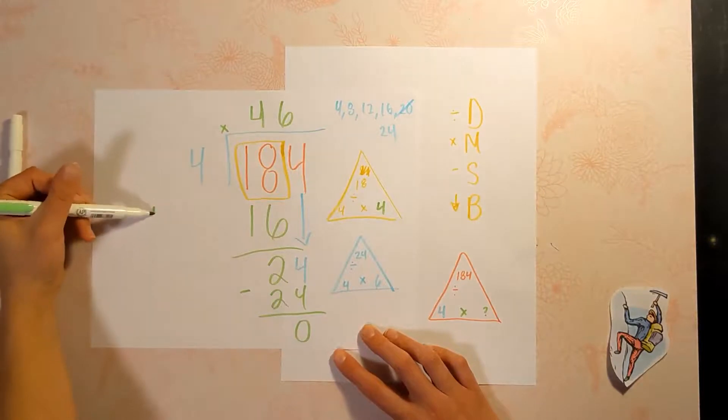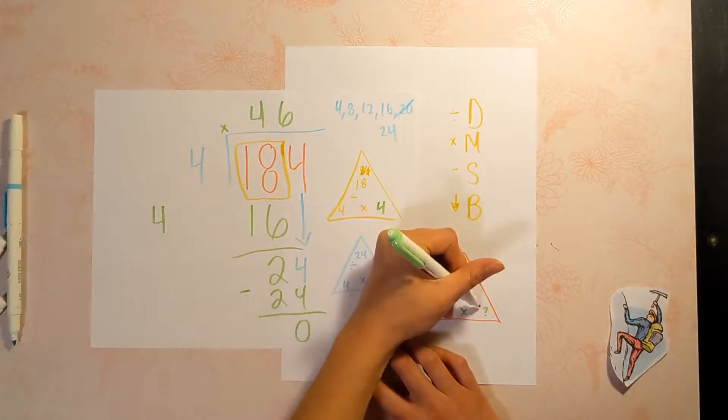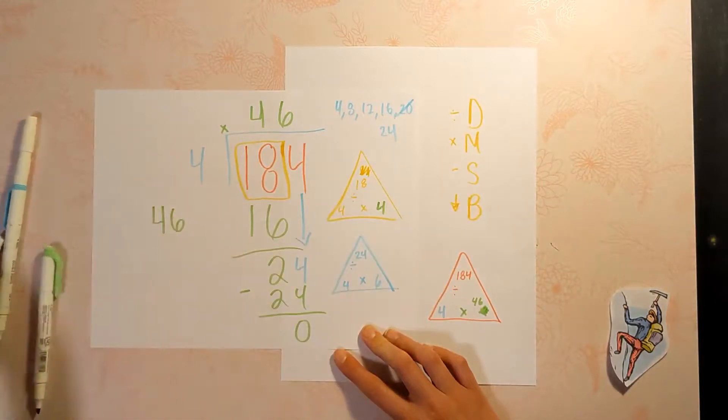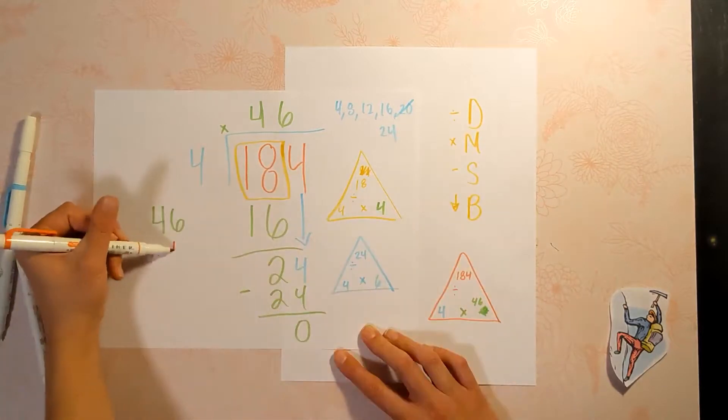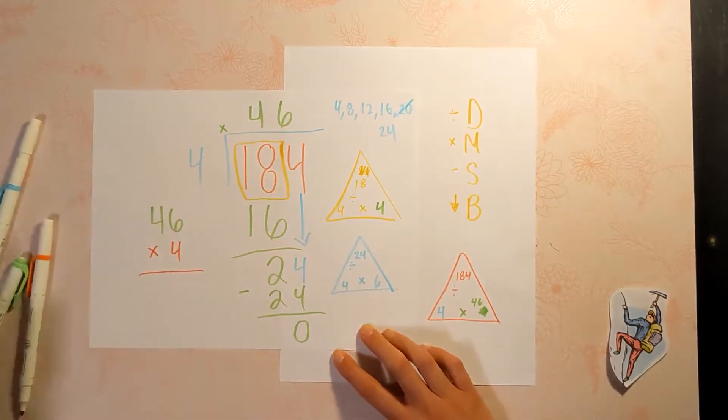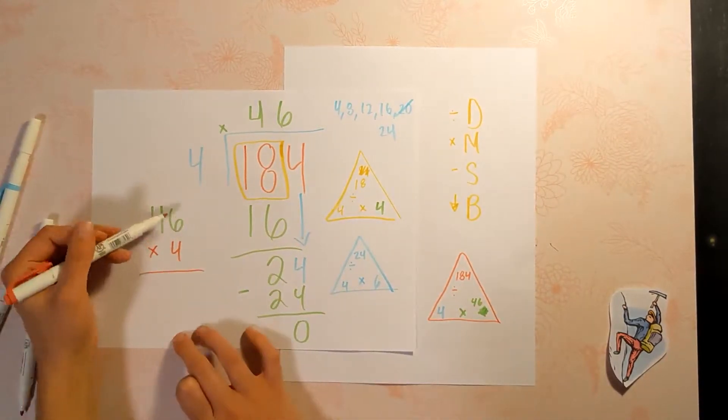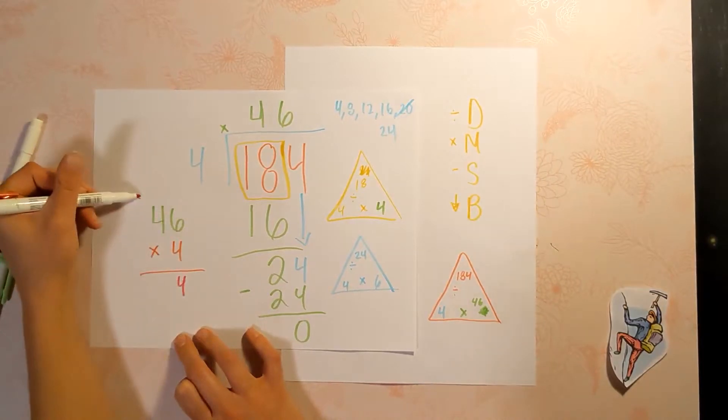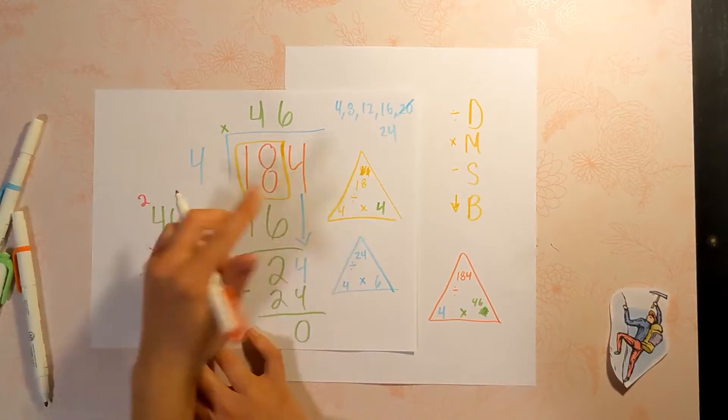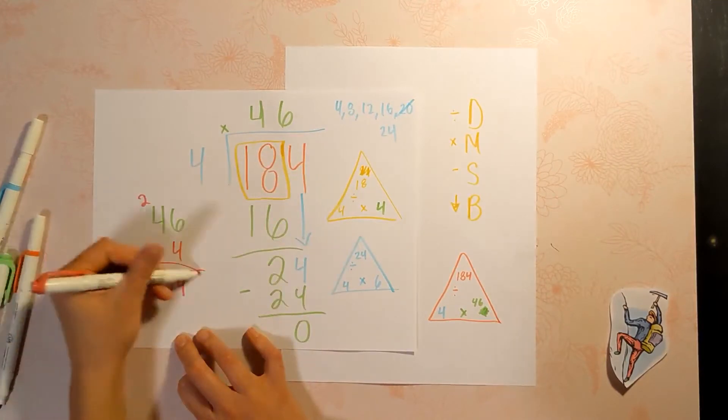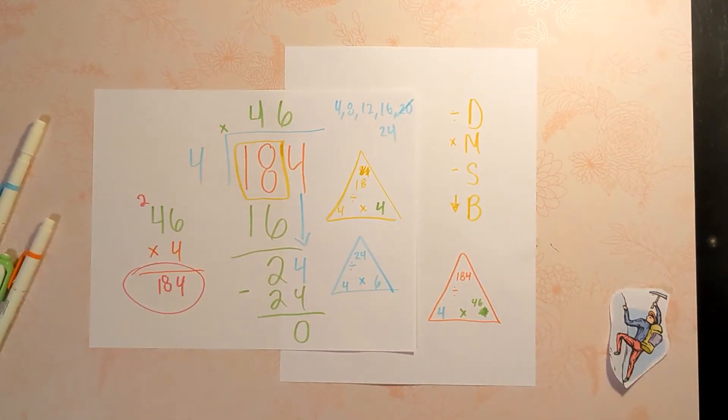And then please make sure that you check it. We're saying 184 divided by four is 46. So therefore you're claiming that 46 times four is 184. We need to check that with multiplication. Four times six is 24. Four times four is 16, plus two is 18. And there you go. That's how we use our standard algorithm.